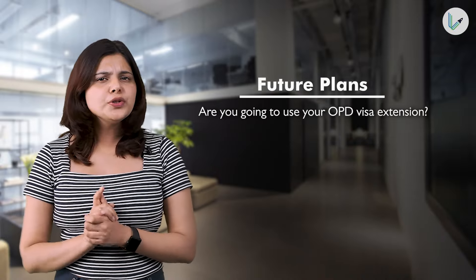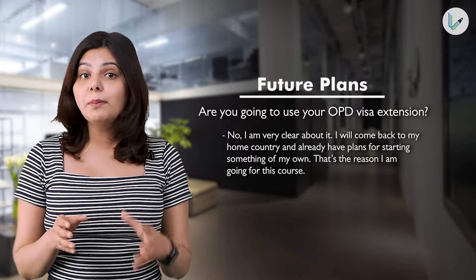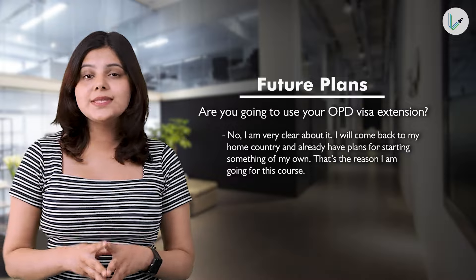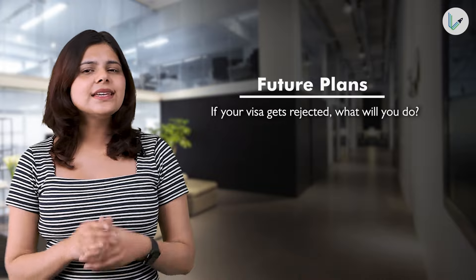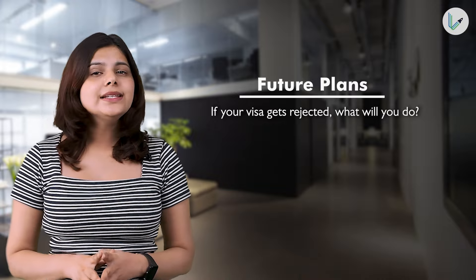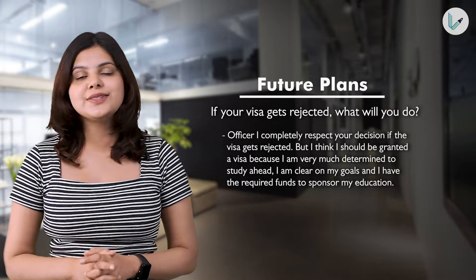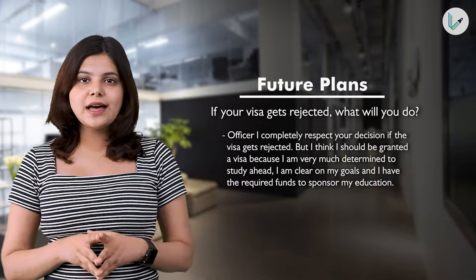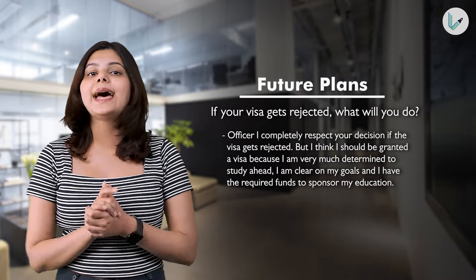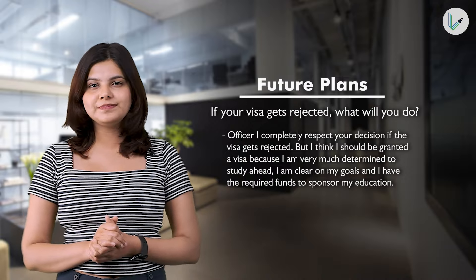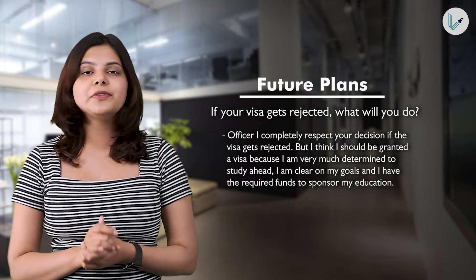Regarding OPT visa extension: 'No, I'm very clear about it. I will come back to my home country and already have plans of starting something of my own — that's the reason I'm going for this course.' If your visa gets rejected, an ideal answer: 'Officer, I completely respect your decision if the visa gets rejected, but I think I should be granted a visa because I'm very much determined to study. I'm clear on my goals and I have the required funds to sponsor my education.' A vague answer: 'I will reapply for the visa and appear for the interview again.'